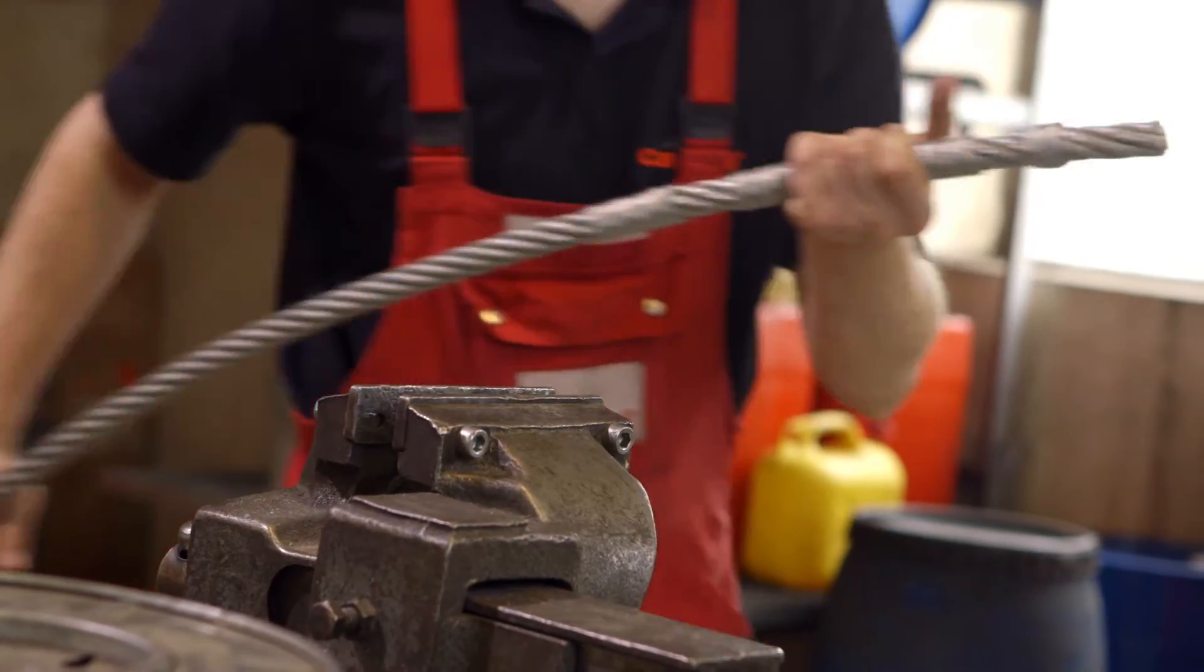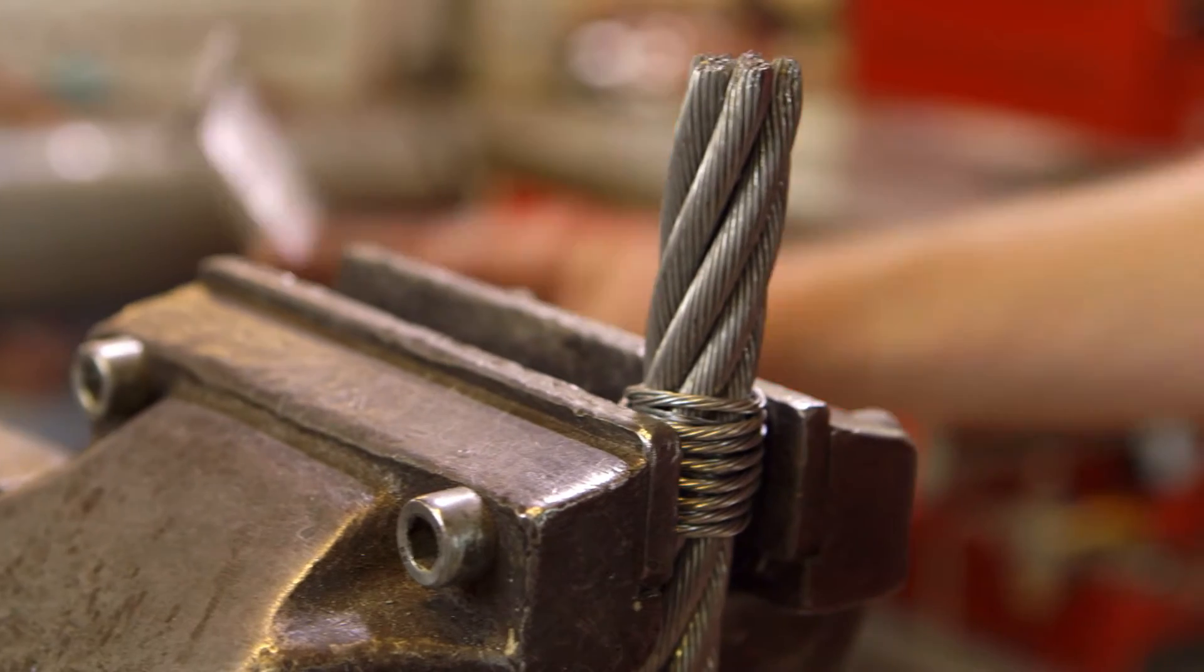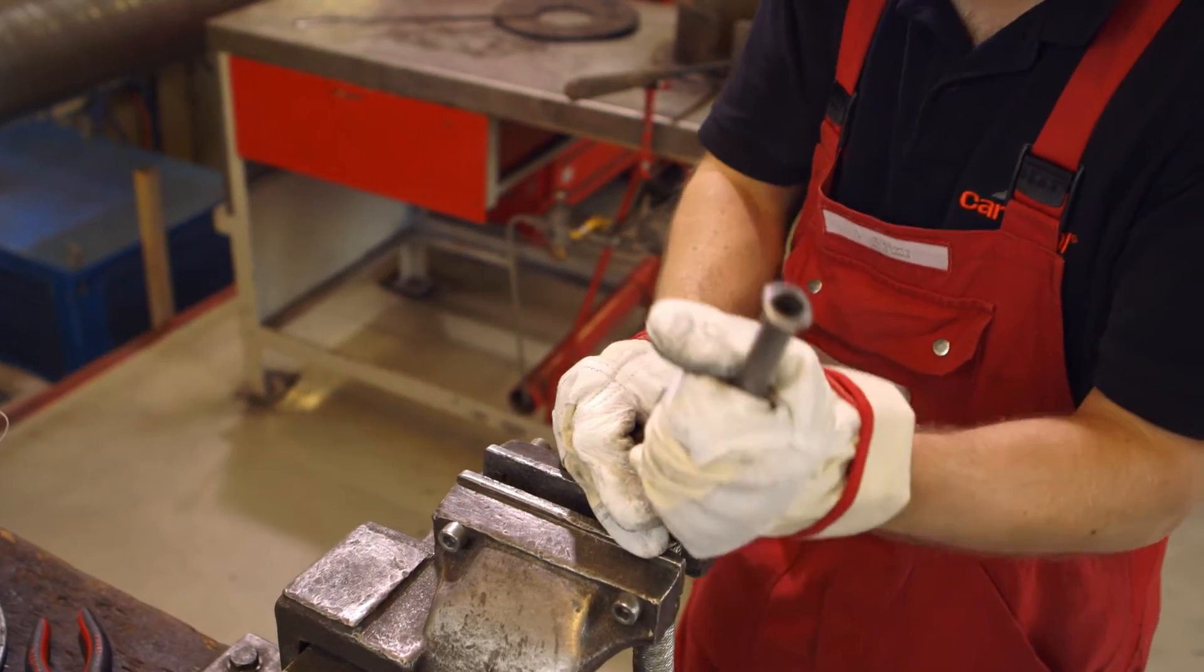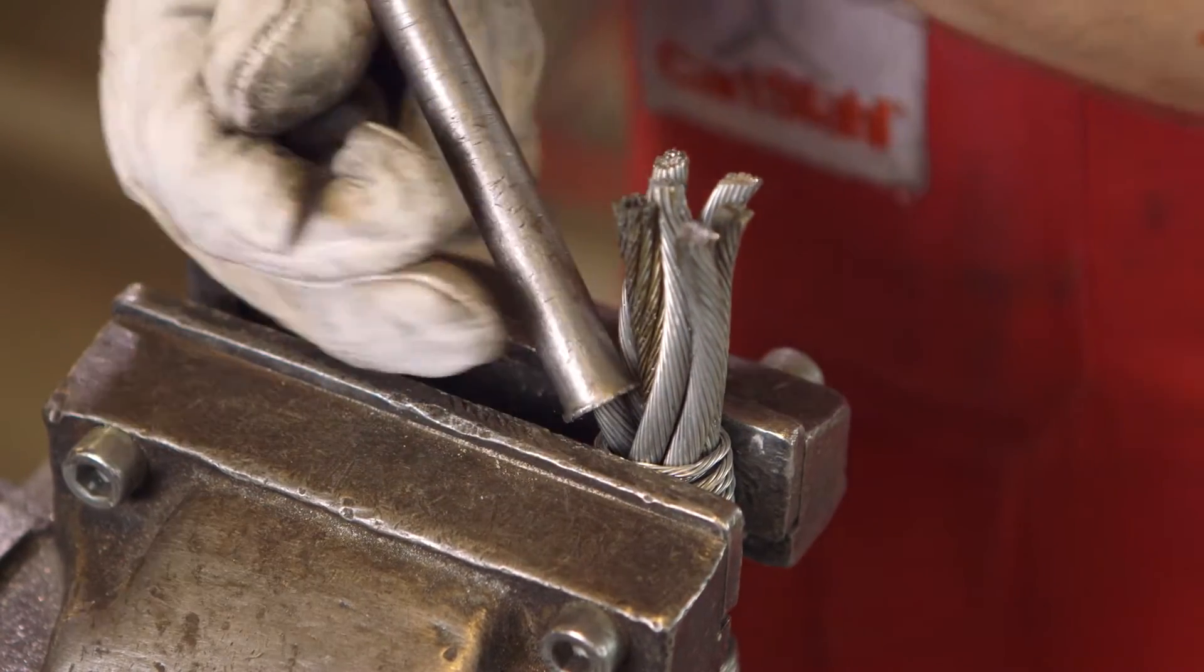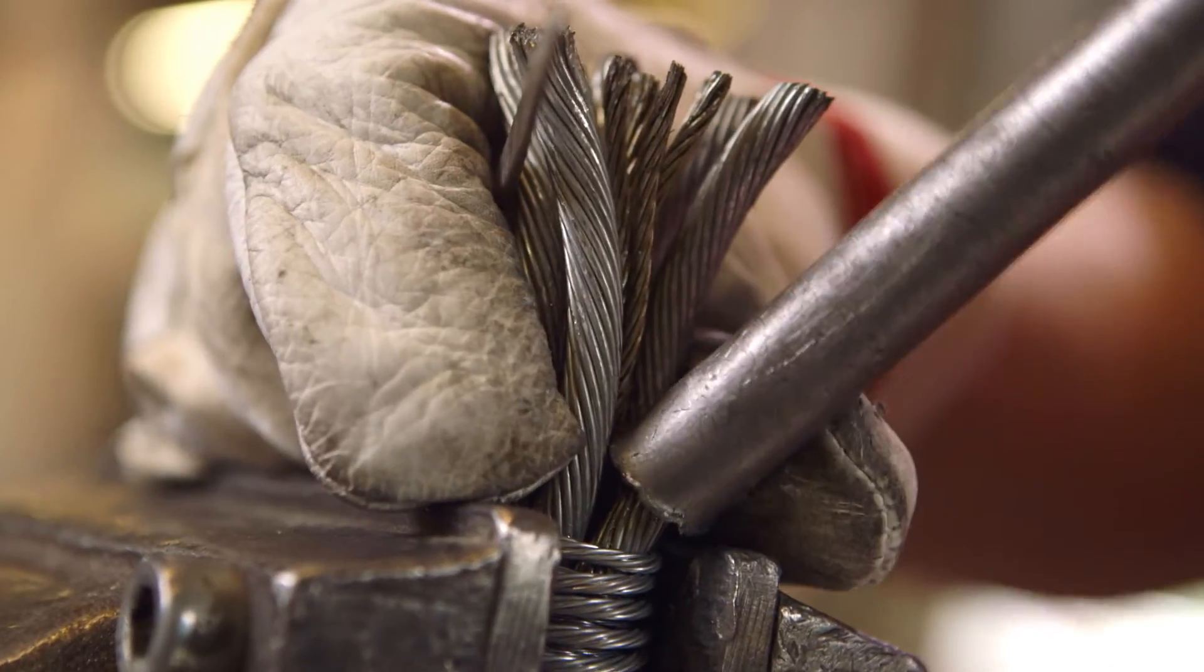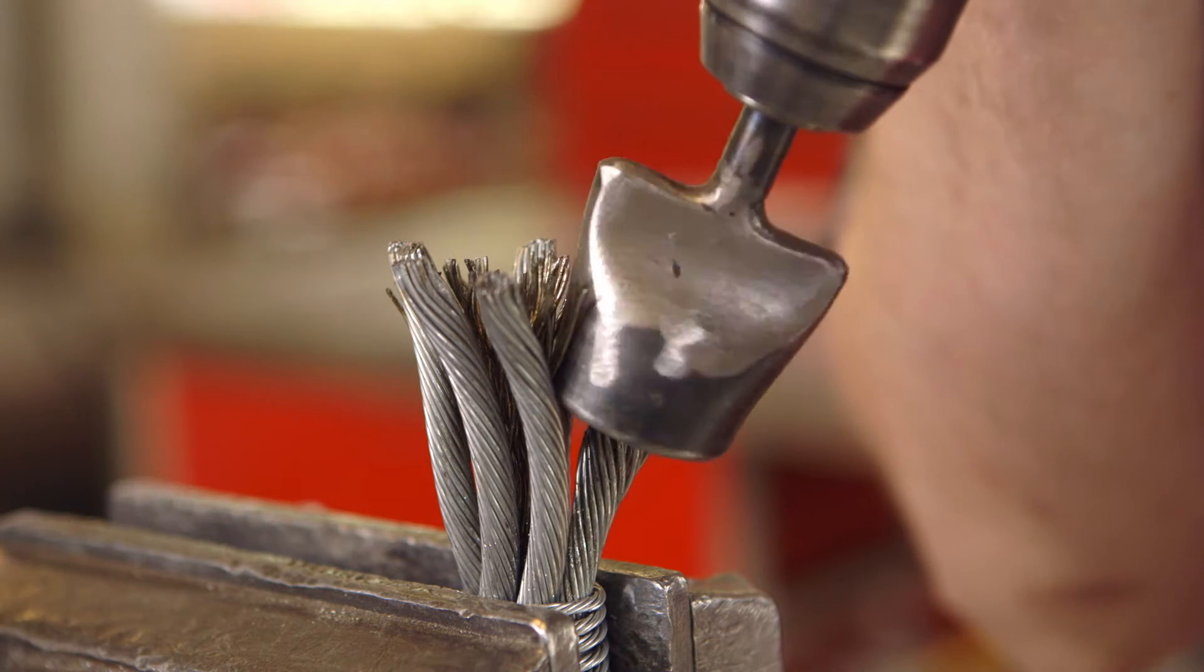The next step for the Rope Spelter Socket is the production of the so-called wire broom. For this, all wires in the rope are untwisted to a previously calculated length. To do this, the rope maker bends the so-called stranded wires open. A rope consists of multiple stranded wires. One stranded wire consists of a core wire and one or more layers of round wires.